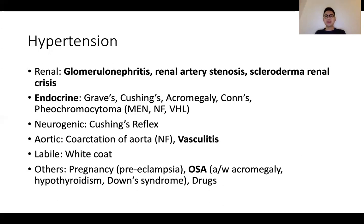I would also like to highlight a common scenario — that of a patient with neurofibromatosis (NF). In patients with NF1, there are three common causes of hypertension: number one, renal artery stenosis; number two, phaeochromocytoma; and number three, coarctation of the aorta. These three conditions are all associated with neurofibromatosis type 1.